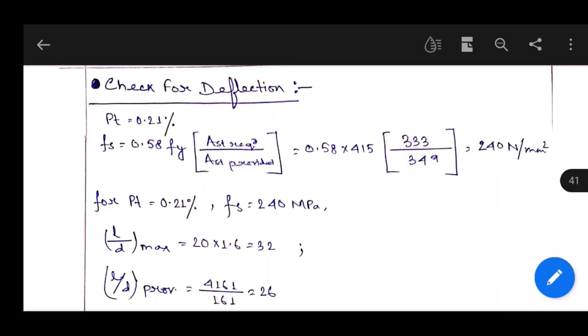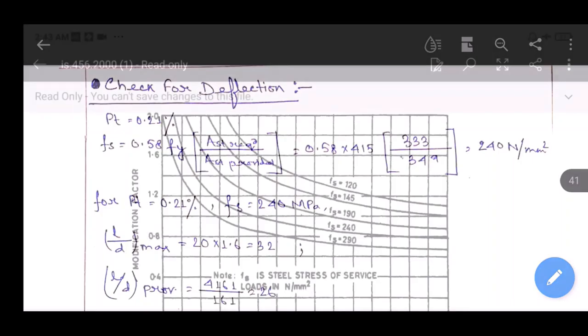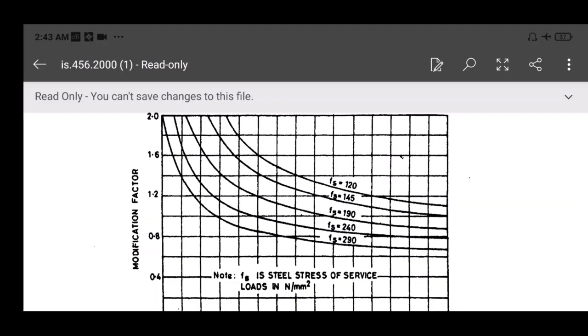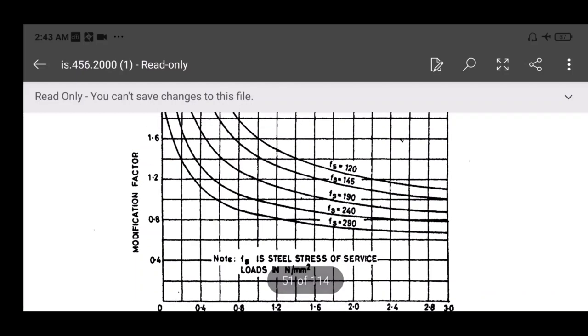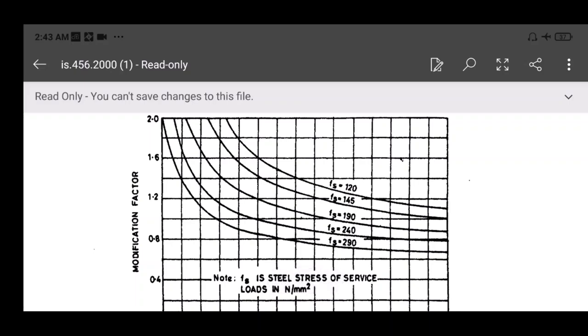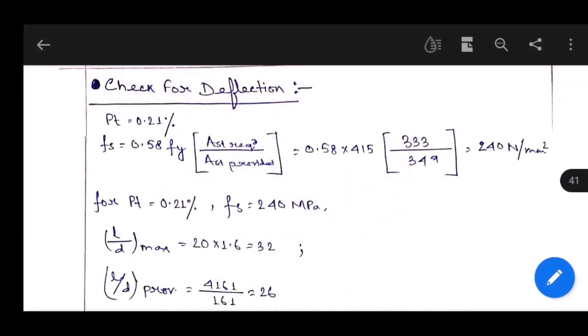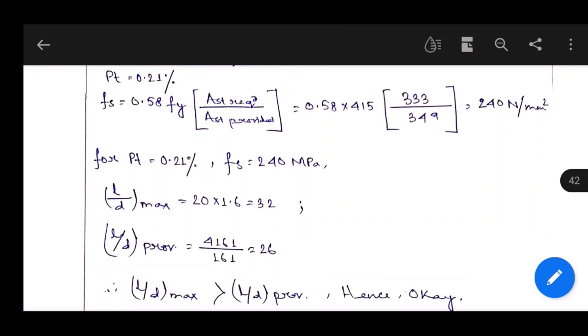We have to find modification factor for percentage of steel 0.21 and FS 240 MPa. From figure 4 of IS 456:2000, modification factor is almost 1.6. For simply supported beam, l/d max equals 20 times 1.6, equals 32. Length-to-depth ratio provided is 4161 by 161, equals 26, which is less than maximum value. Hence it is okay.